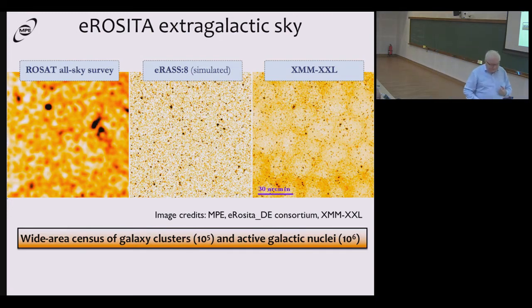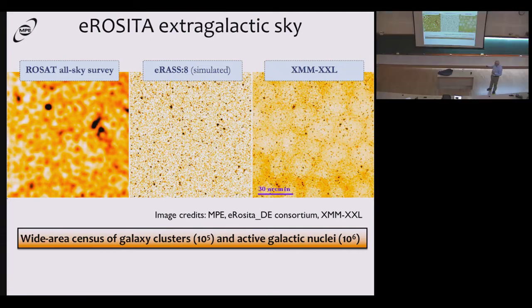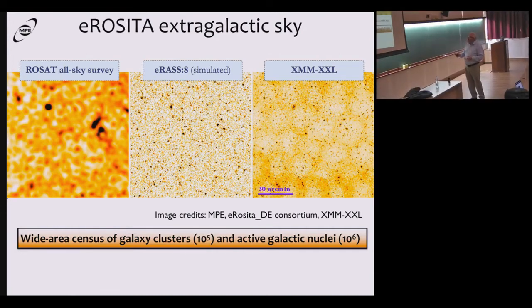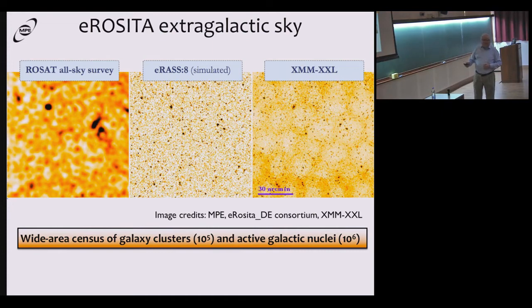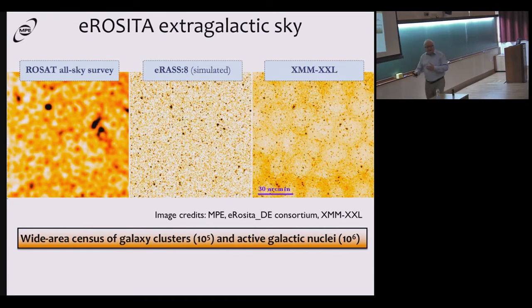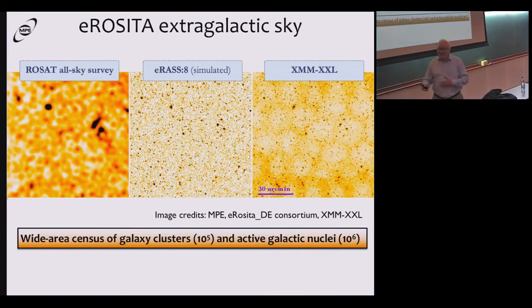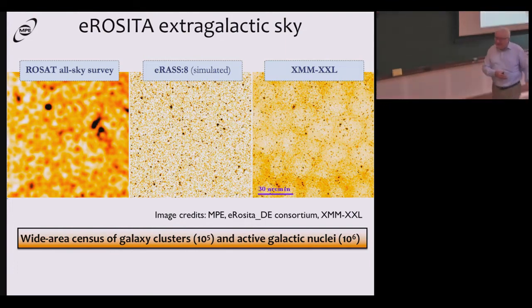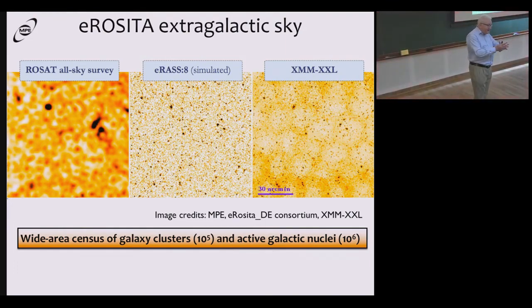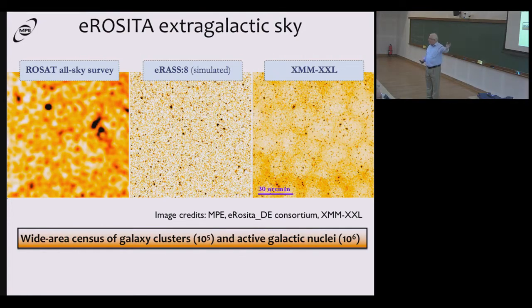Mirrors and detectors of eROSITA have enormous effective surface area of telescopes multiplied by field of view. It is much higher than XMM and many orders of magnitude better than Chandra spacecraft, due to this very wide angle which is observable. This is the main propaganda slide.